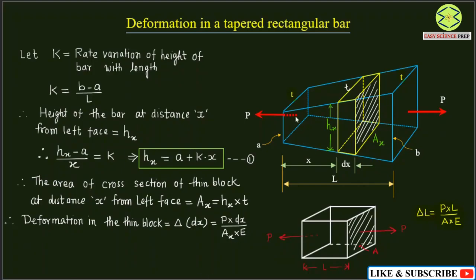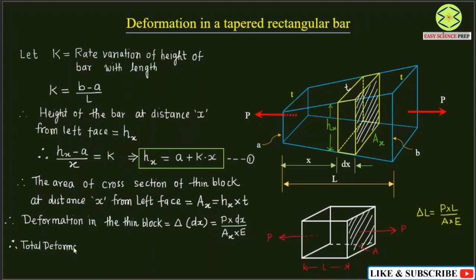To find the total elongation in the tapered bar, we consider similar thin disks from the left face to the right face and sum the elongation in each disk. This procedure is integration. If we integrate the deformation in each thin block from one end to the other, we get the overall deformation in the bar. The total deformation δL is the integral of the small deformation from x = 0 at the left end to x = L at the right end.